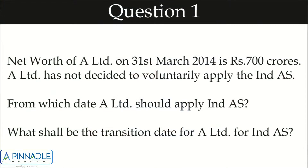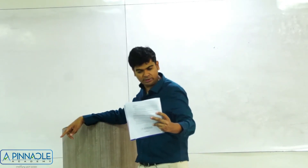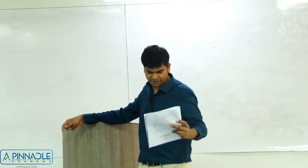Let's start with the applications. They are saying the net worth of A Limited on 31st March 2014 is 700 crores. A Limited has not decided to voluntarily apply Ind AS. Since nothing is clarified, we assume the company is listed. Listed company with net worth 700 crores on 31st March 2014 falls under Phase 1, so A will apply Ind AS from 1st April 2016.